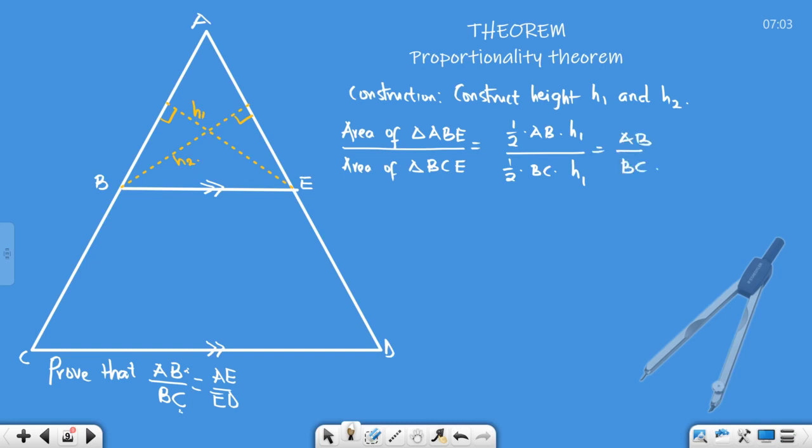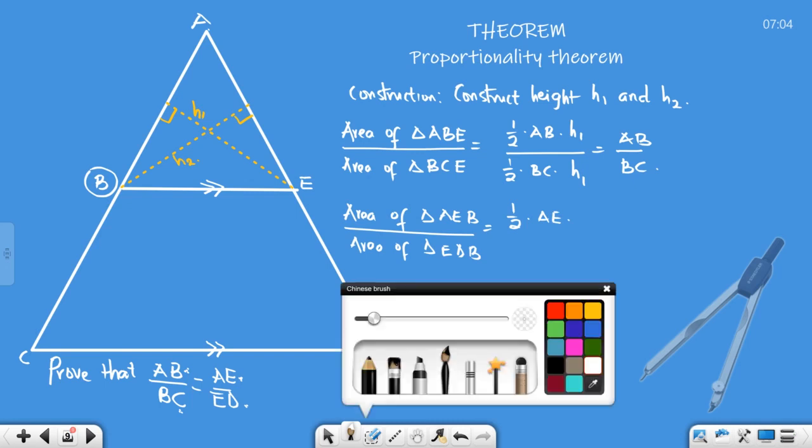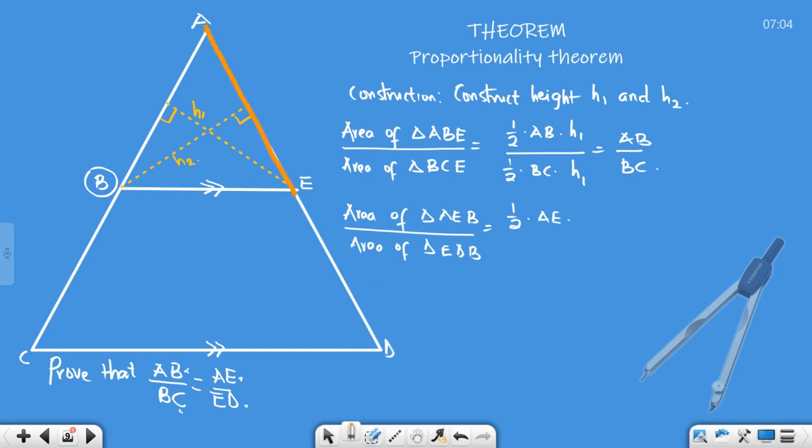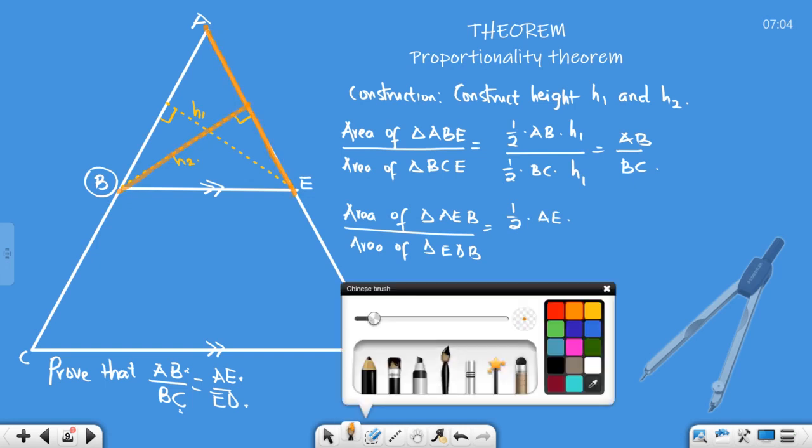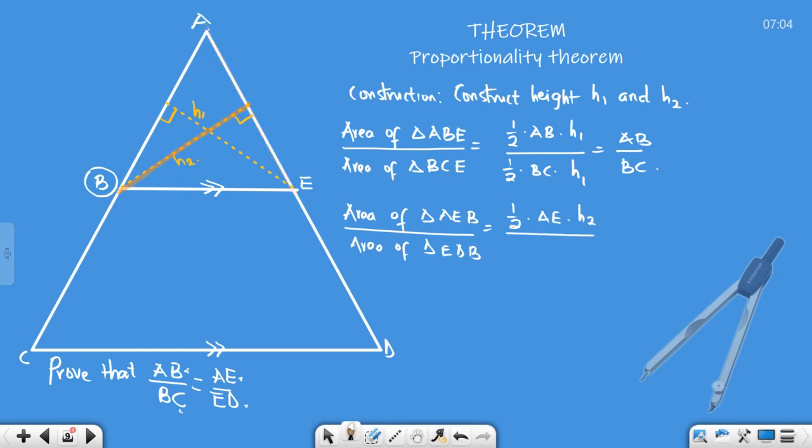Now the second part: area of triangle AEB (I'm now working with AE, my vertex would be B) over the area of triangle EDB. Same my base, ED, same vertex. This becomes half your AE, which is already your base. If AE is the base, where is my height? The height is h2. This is your ED which is the base as well, h2. So what's your answer? AE over ED.